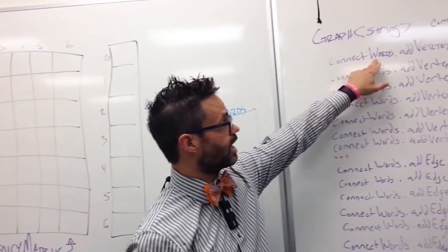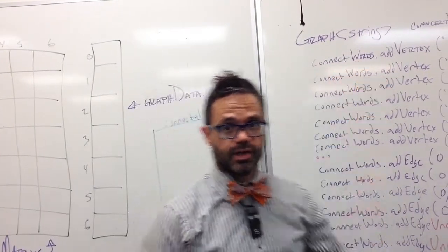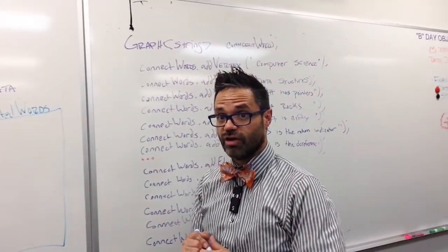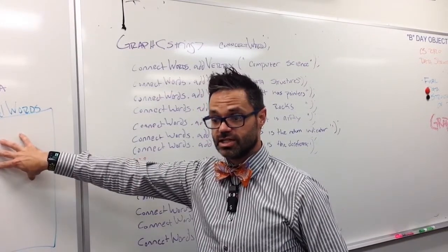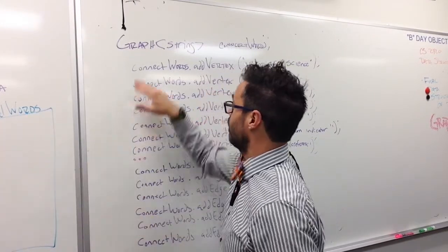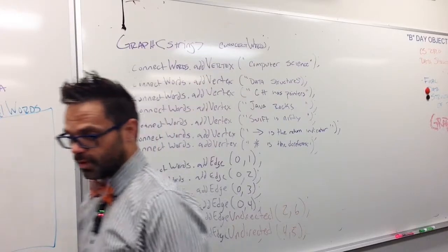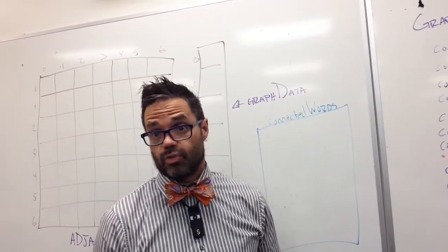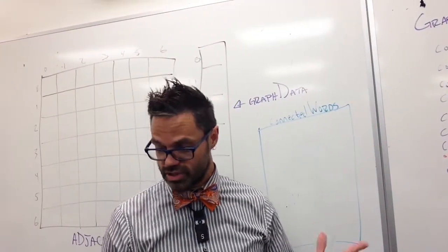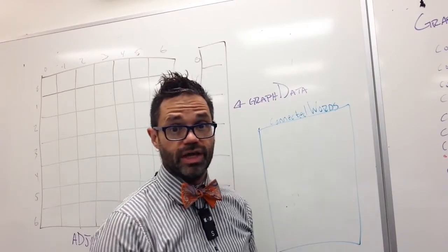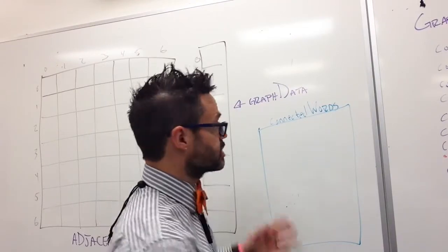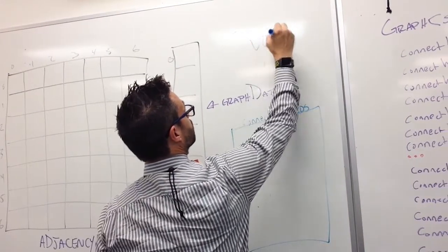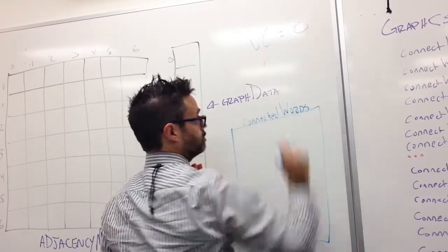The first step we have is connect words dot add vertex. Connect words dot add vertex is how we add a value into the actual graph itself. The first process we have to do is make sure that we're not at maximum capacity. Since we're not there, we're good. Then we create a new vertex number, which is our vertex count. Since we have nothing in here, our vertex count to start off with is zero.